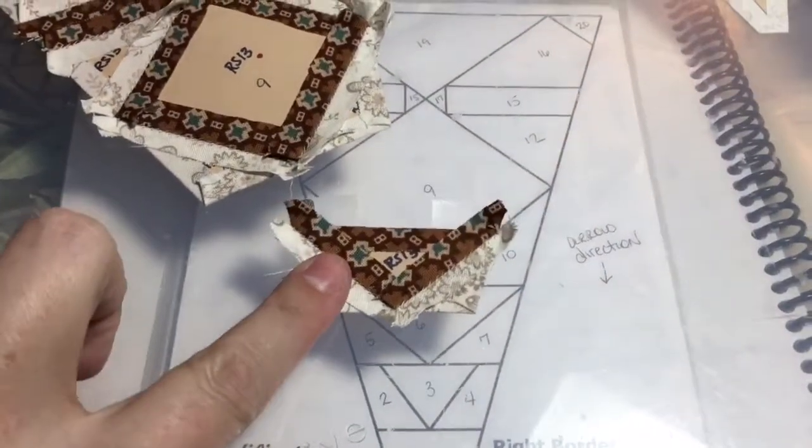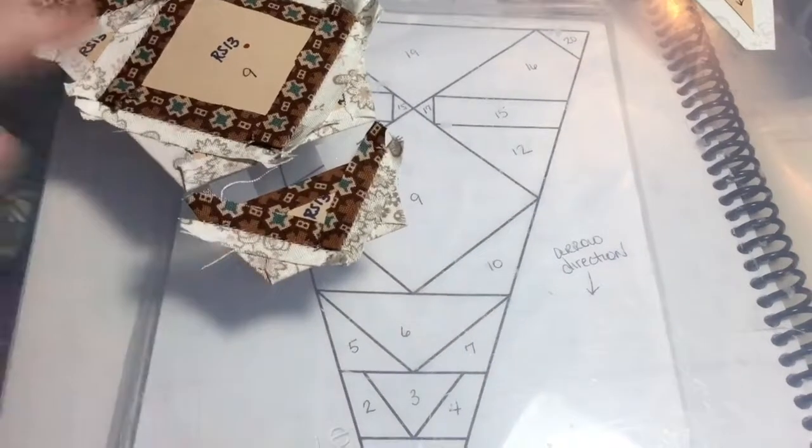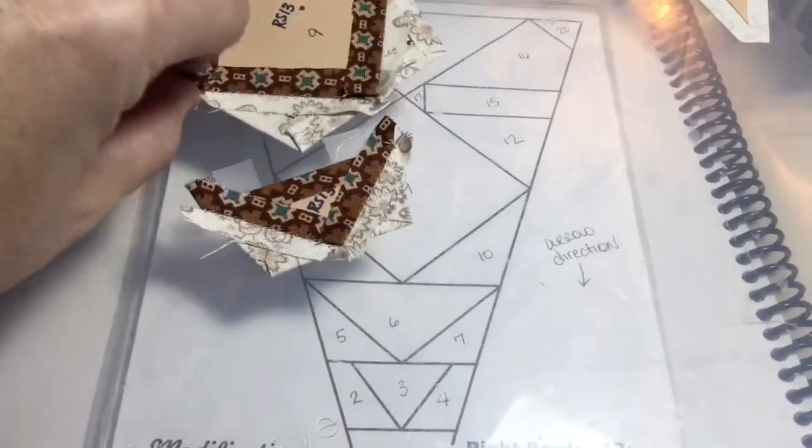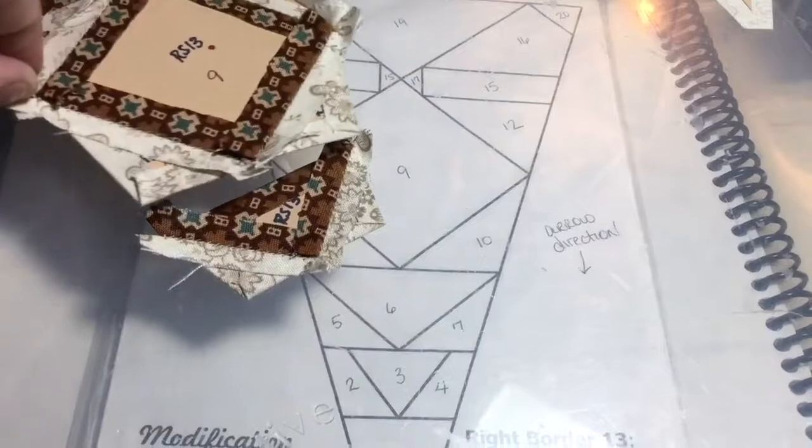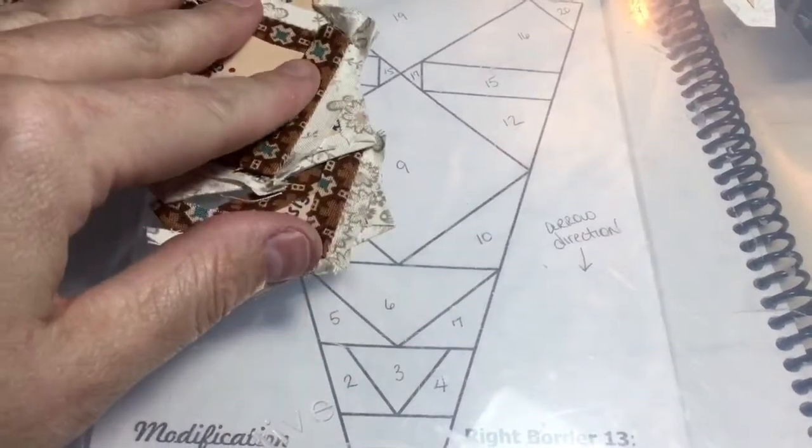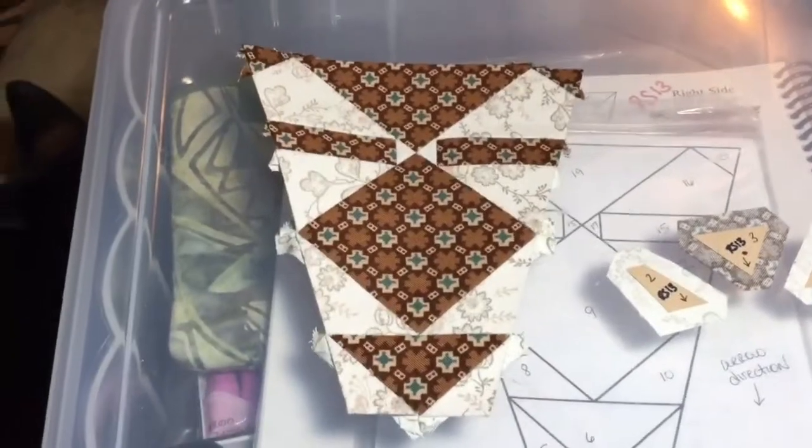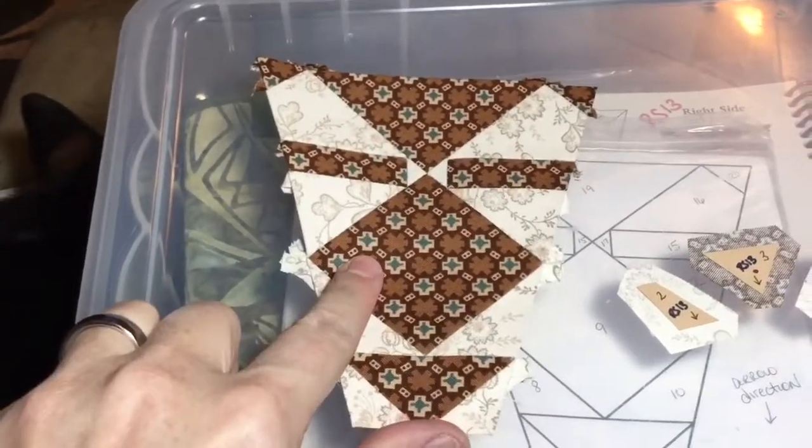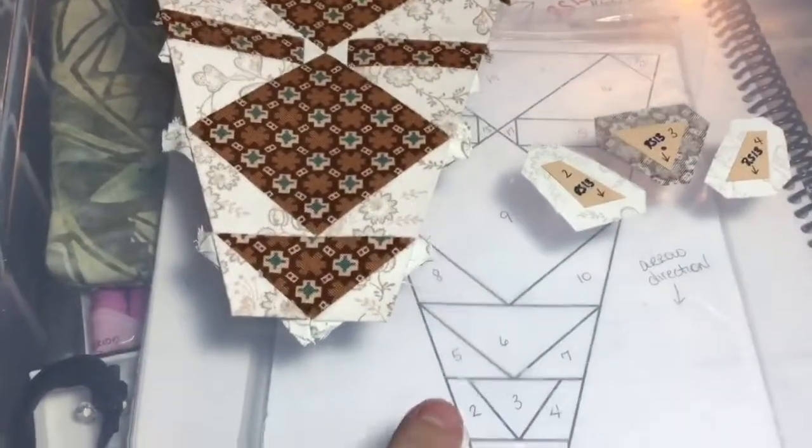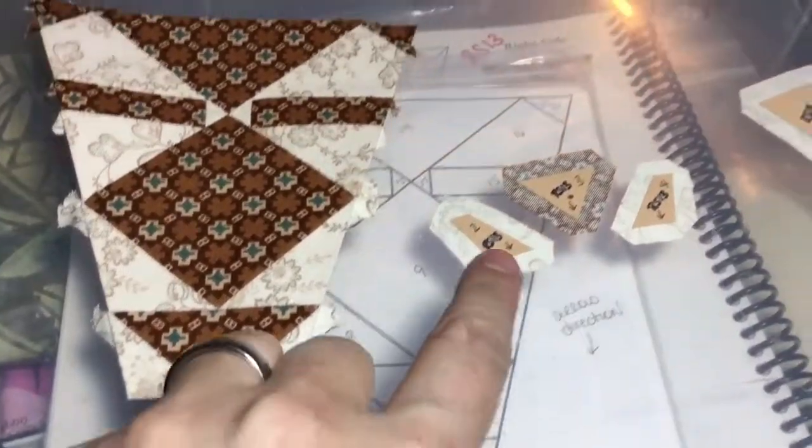So I have my 5, 6, and 7 units made, and I'm going to attach this to the rest of my block that I have assembled. Okay, now I've connected this row to the rest of these, and I'm going to assemble my 2, 3, 4 unit right here.